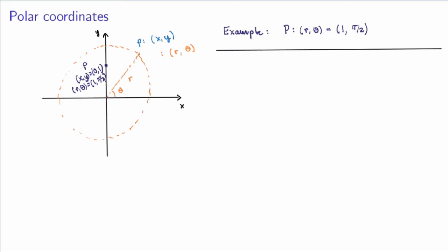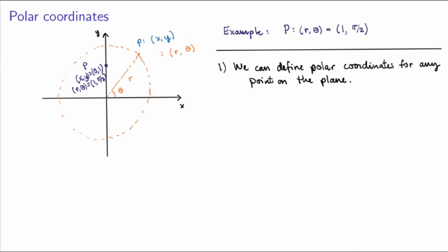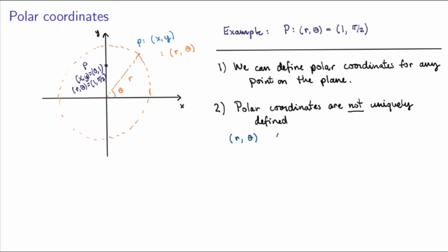So there are certain things to notice here. First, we can define polar coordinates for any point on the plane — any point will lie on a circle of a certain radius and be given by a certain angle of rotation. Second, polar coordinates are not uniquely defined. If you take the polar coordinates (r, θ), this defines a point on the plane. But the polar coordinates (r, θ + 2π) represent the exact same point, because I'm still on the circle of radius r and just doing one more rotation. In fact, this is true for any polar coordinates of the form (r, θ + 2πn) where n is an integer — all of those represent the same point.